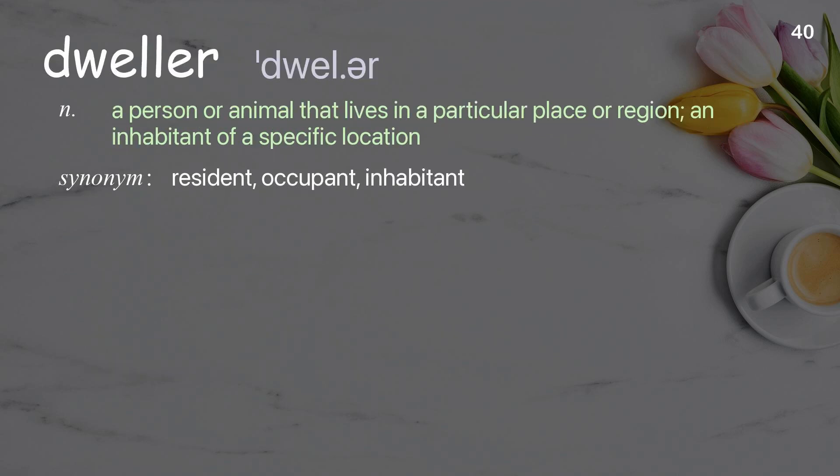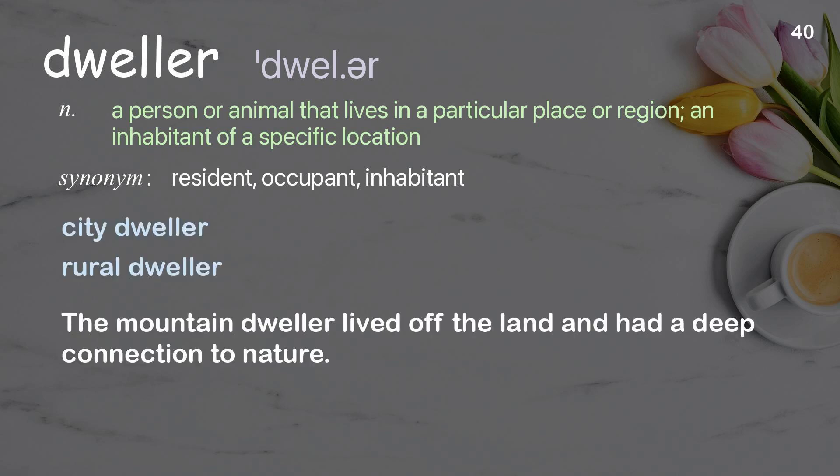Dweller: a person or animal that lives in a particular place or region; an inhabitant of a specific location. Examples: city dweller, rural dweller. The mountain dweller lived off the land and had a deep connection to nature.